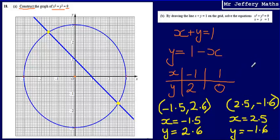and that gives me a y coordinate of negative 1.6. So my final answer is there, x equals negative 1.5, y equals 2.6. That would be one solution. The other solution, x equals 2.5, y equals negative 1.6.